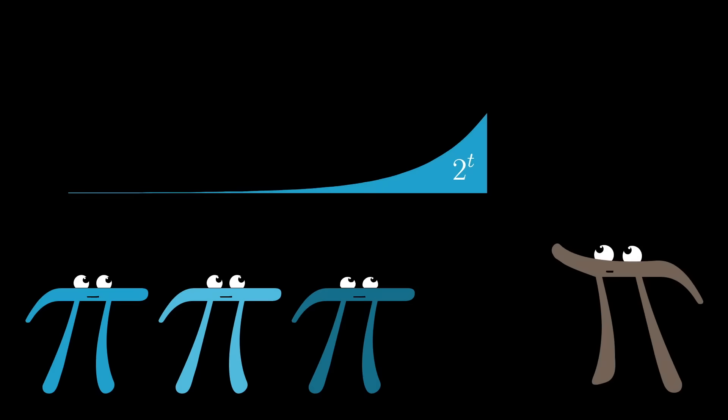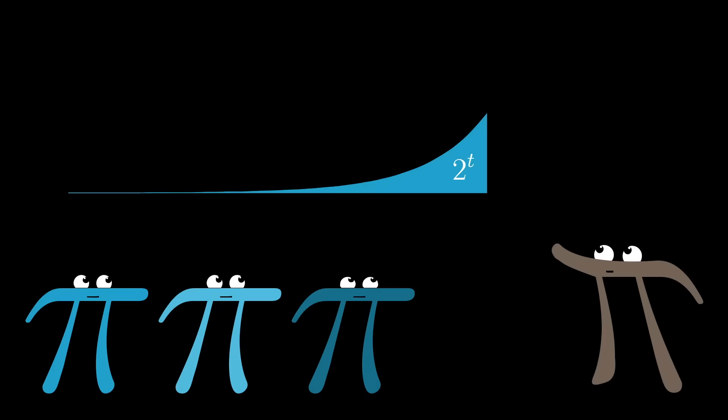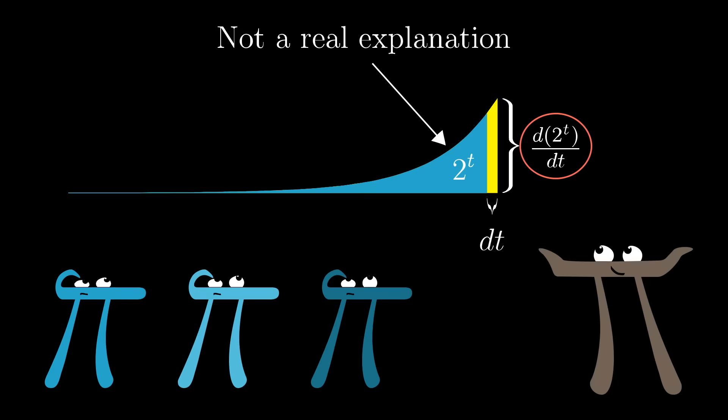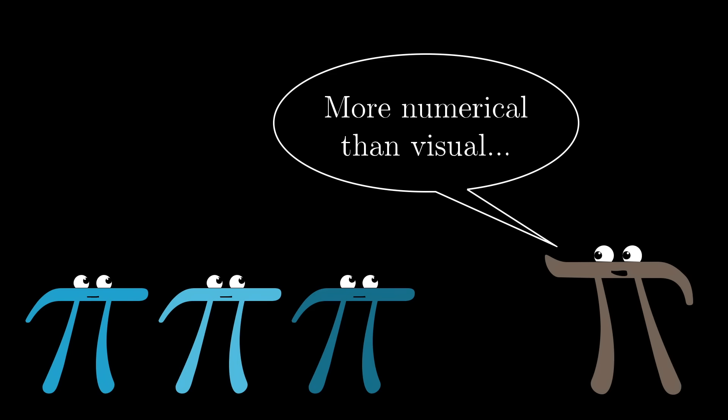And here's the thing. I would love if there was some very clear geometric picture that made everything that's about to follow just pop out. Some diagram where you could point to one value and say, see, that part, that is the derivative of 2 to the t. And if you know of one, please let me know. And while the goal here, as with the rest of the series, is to maintain a playful spirit of discovery, the type of play that follows will have more to do with finding numerical patterns, rather than visual ones.